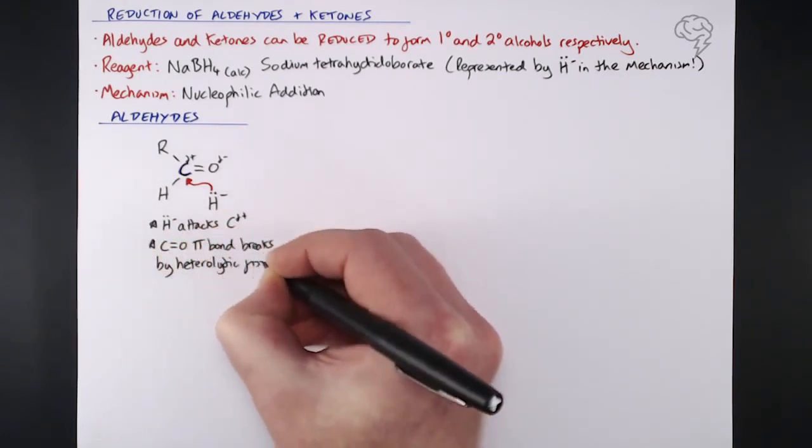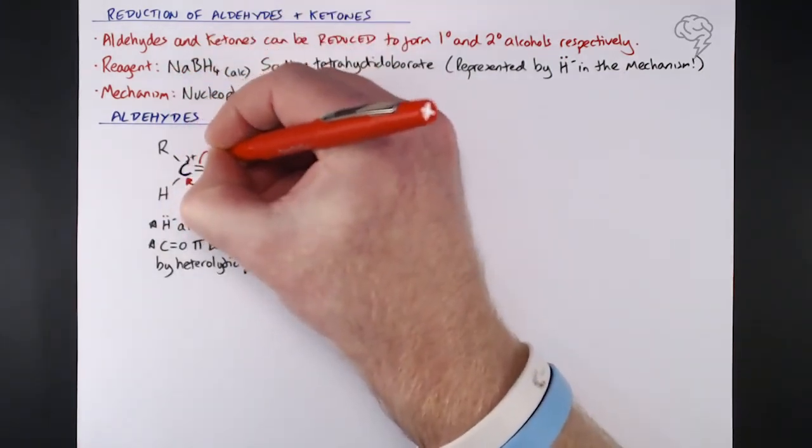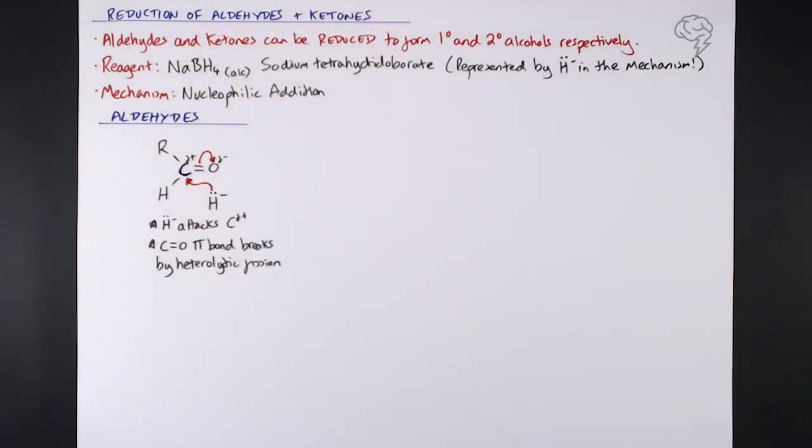That something is the C double bond O - it's the pi bond that breaks by heterolytic fission. It's the weaker of those two bonds, so a curly arrow from the bond to the delta negative oxygen gives us a fully negative oxygen, which is our intermediate.